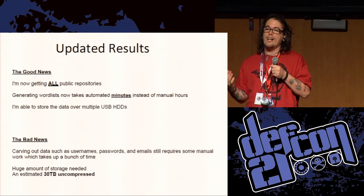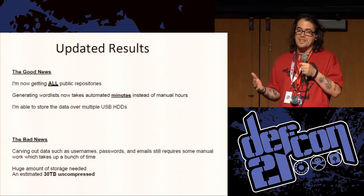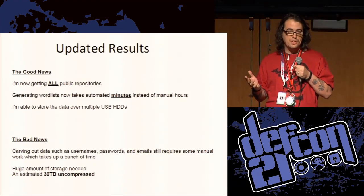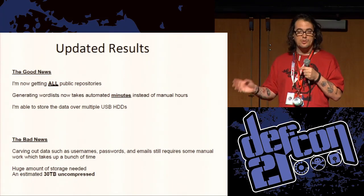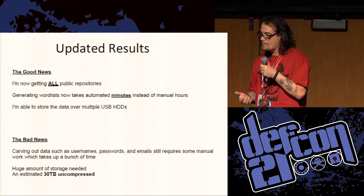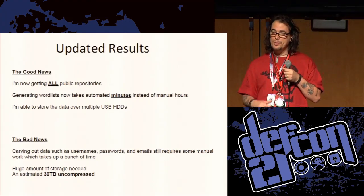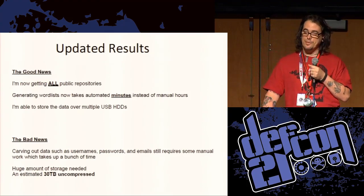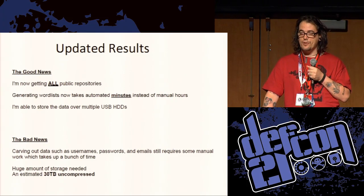The updated news: I now have all the repositories — I can now get every single public one. Generating the word list with the bash script takes minutes once everything is in the database. Because of the database updates, I can now store the repositories on any hard drive I want, search the database, and it will tell me which one to go to get. I'm estimating it's going to take about 30 terabytes to download all the public repositories, though everybody is uploading new stuff every single day — I could probably continue with this project forever and never see the end of GitHub.